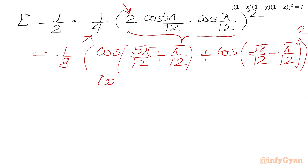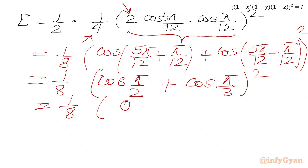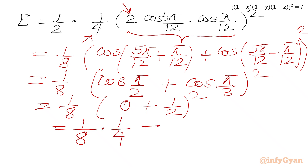Inside the bracket we have cos(6π/12) = cos(π/2) and cos(4π/12) = cos(π/3). So the expression becomes (1/8)(cos 90° + cos(π/3))² = (1/8)(0 + 1/2)² = (1/8)(1/4) = 1/32. So our final answer is 1/32.